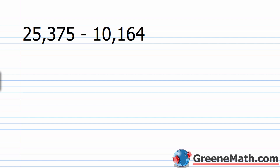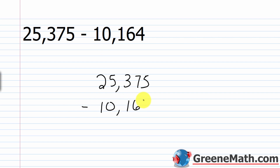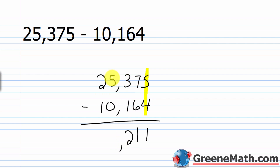Now we have 25,375 minus 10,164. Again, stack these numbers on top of each other. 25,375, the minuend, has to go on top, and 10,164, the subtrahend, goes on the bottom. Start in the ones column: 5 minus 4 is 1. Work to the left — tens column: 7 minus 6 is 1. Hundreds column: 3 minus 1 is 2. Thousands column: 5 minus 0 is 5. Ten-thousands column: 2 minus 1 is 1. So we end up with 15,211.